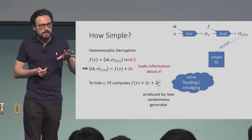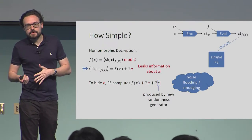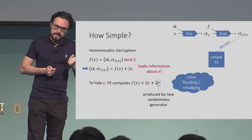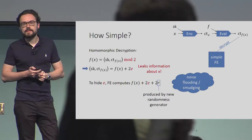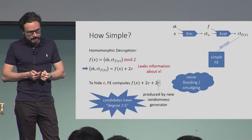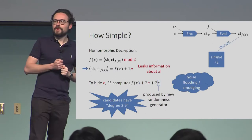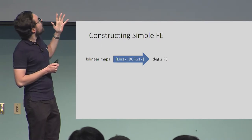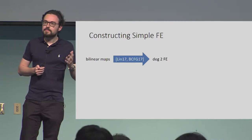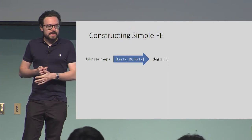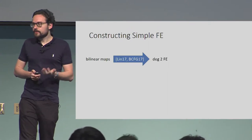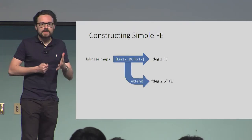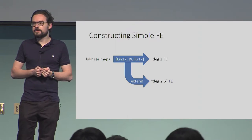This randomness that we add is precisely where we use this new type of randomness generator that I mentioned before. The question of how simple this FE scheme can be directly relates to how simple it is to generate this randomness — we want to make sure it is as simple as possible and still able to hide this noise e. Our candidates essentially have degree 2.5, and I'll say later what this means. Starting point is that bilinear maps imply degree 2 functional encryption, and by massaging these schemes appropriately, we managed to extend them to also work for degree 2.5.